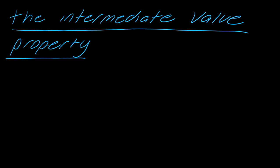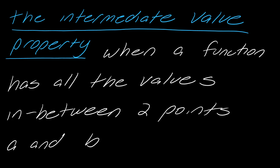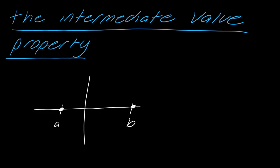So let's talk about the intermediate value property. So this is when a function has all of the values in between two points A and B. So what does that mean? So here's a graph, so I've got these two points marked here, A and B.